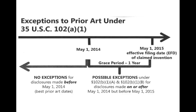One of the exceptions we have is the grace period. If you file on May 1, you've got a grace period for one year. Anything you disclose in that time is okay under the exception — that's 102 B1. If it's before the grace period, there are no exceptions. I think that's pretty clear.